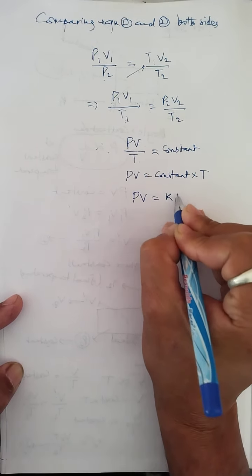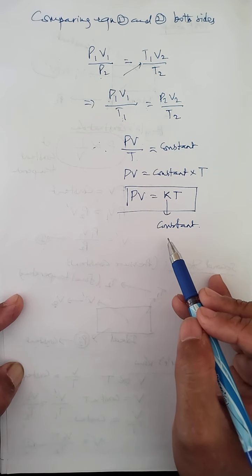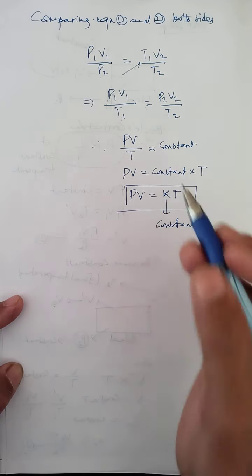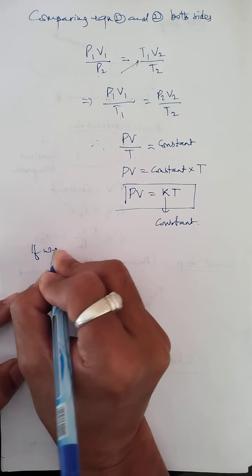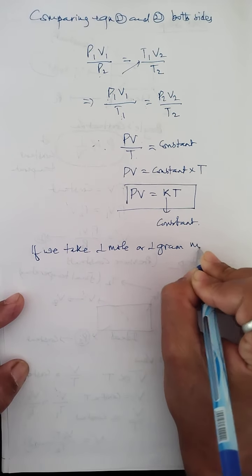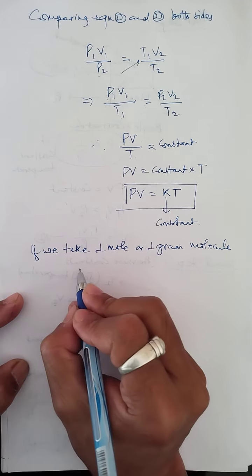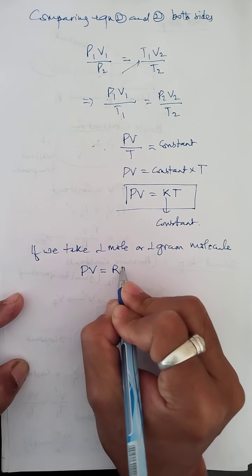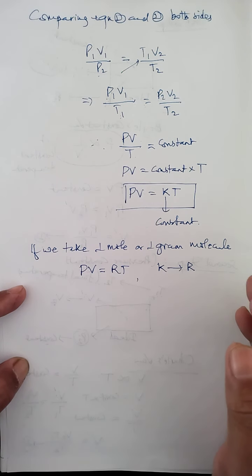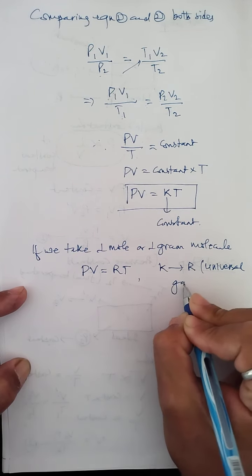By combining the two laws we get PV/T = k, where k is a constant for a given mass of gas. If we take one mole of gas — also called one gram-molecule, equal to the molecular weight of the gas in grams — then PV = RT, where R replaces k and is called the universal gas constant.